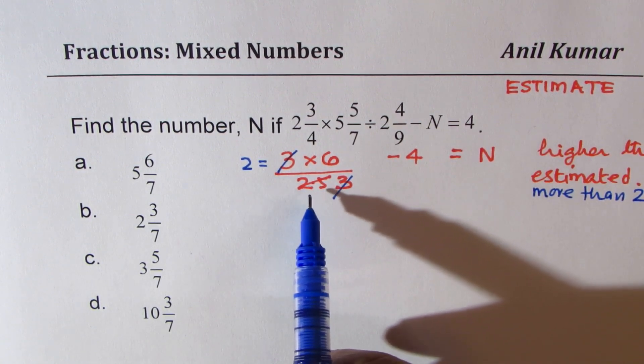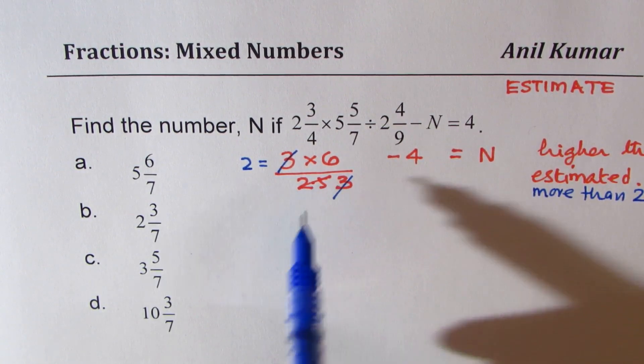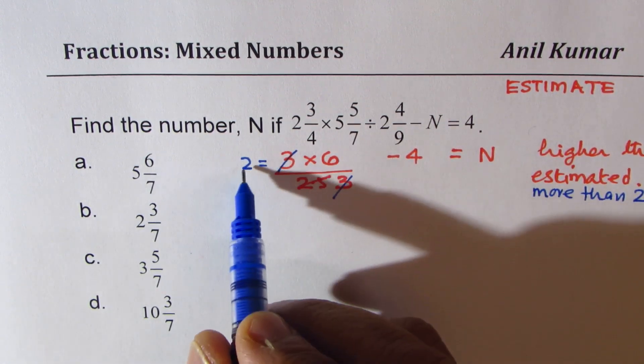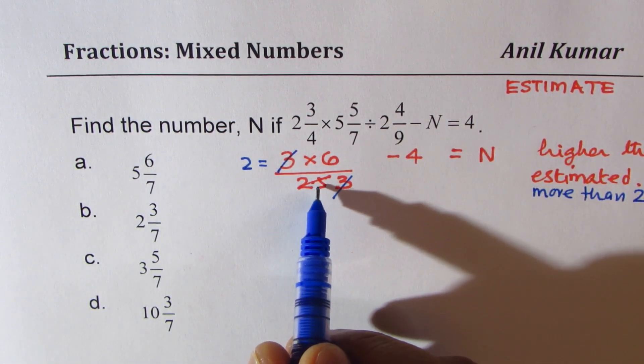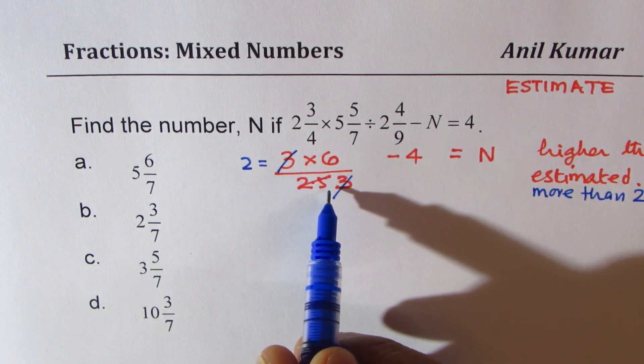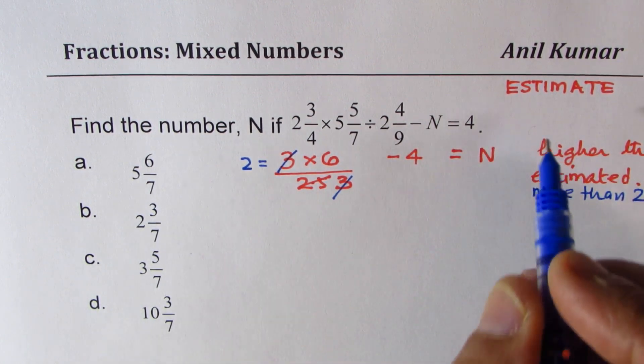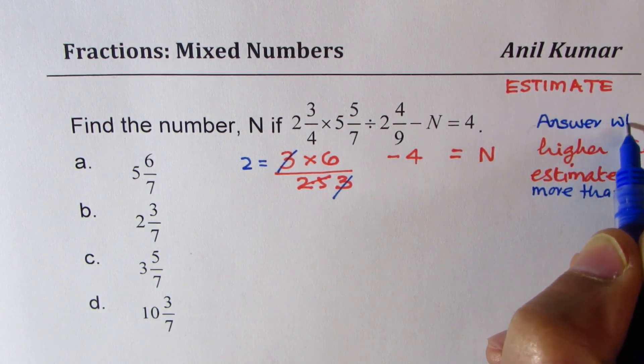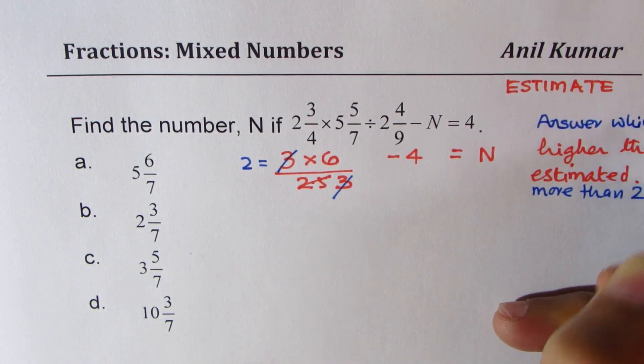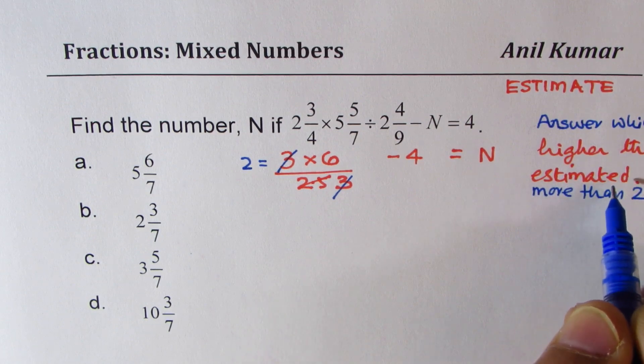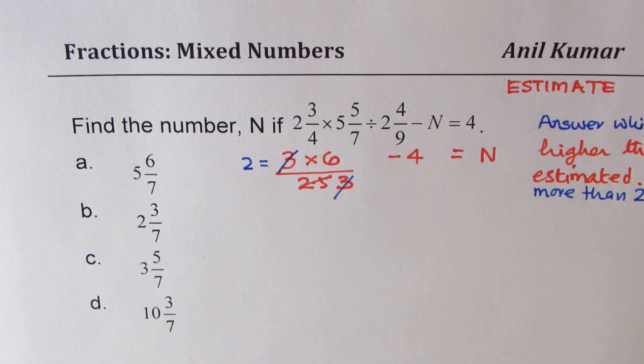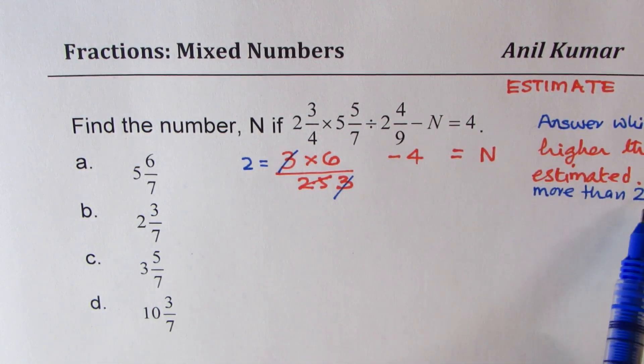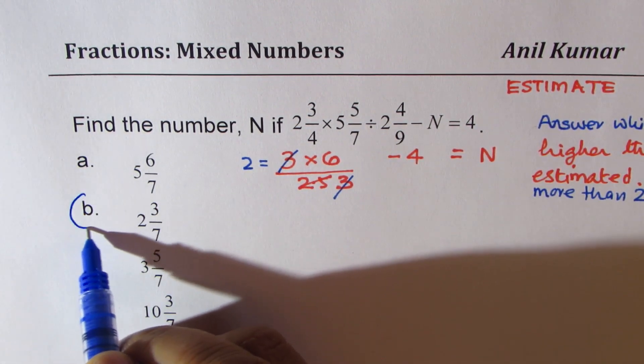Because if I would have divided by 2.5, I would have got something like 3 here. So, it is between 2 and 3. You get my point. So, instead of 2.5, I made it 3. So, we are expecting answer, which is higher than estimated. 6 minus 4 is 2. We are expecting higher than 2. And therefore, the answer is B.